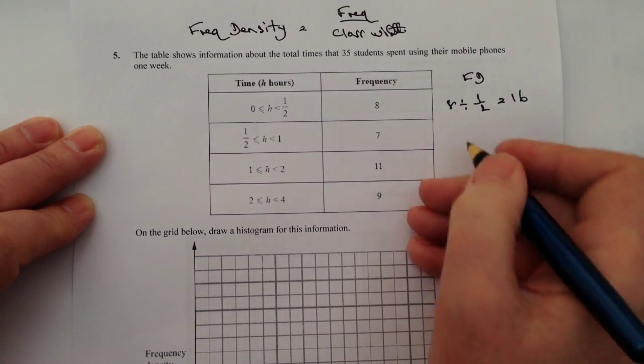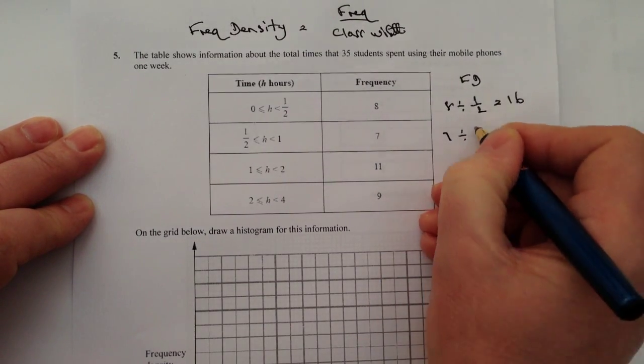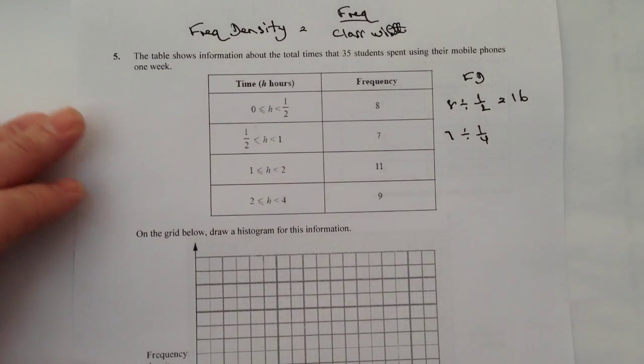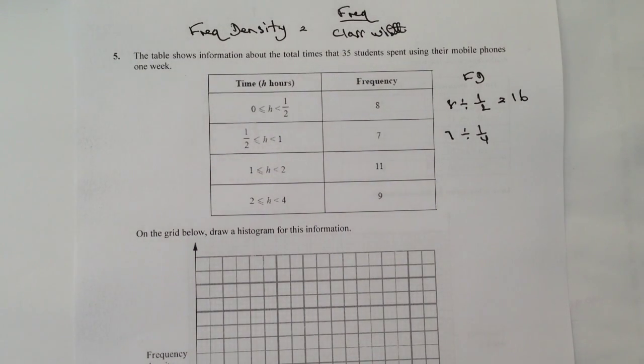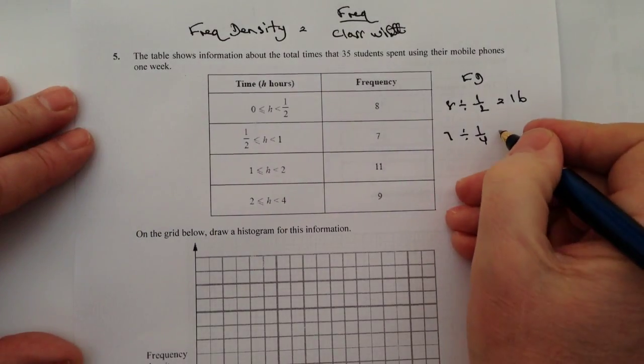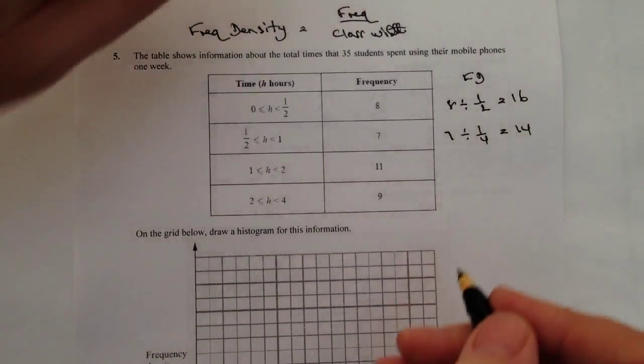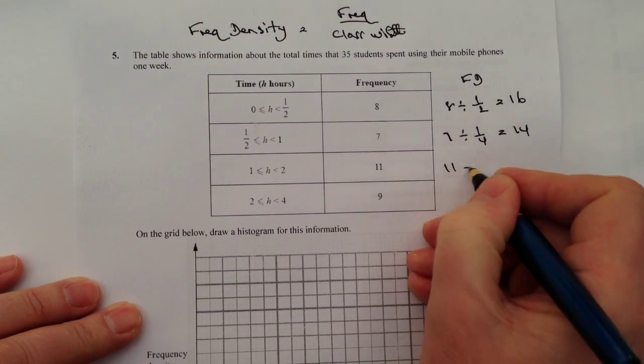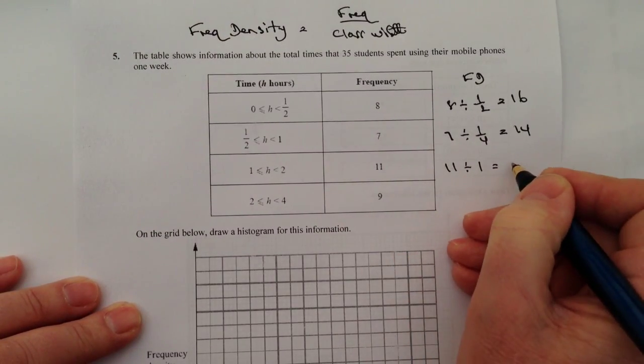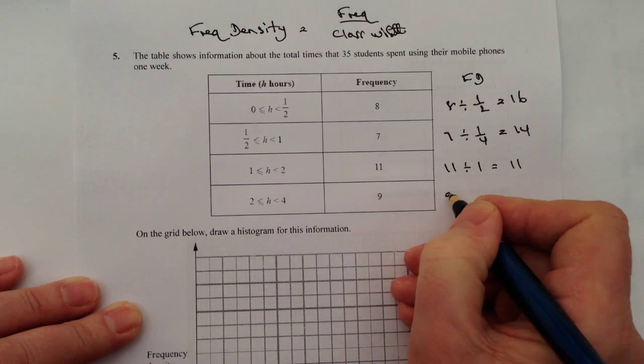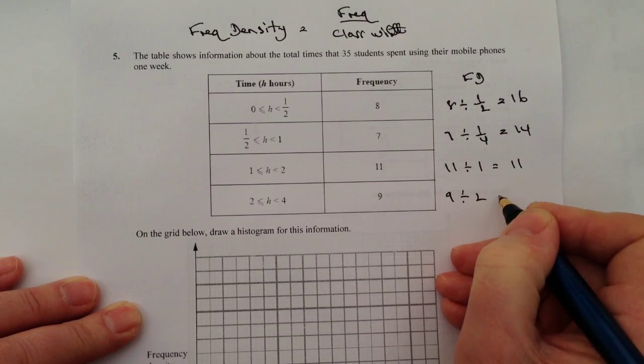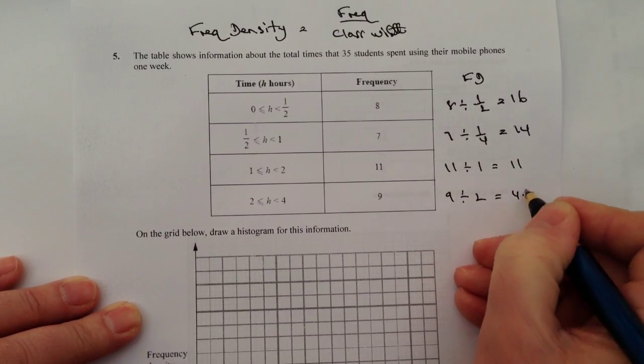The next one is going to be seven divided by a quarter. And I wouldn't get so concerned that you've got fractions to deal with. It's perfectly legitimate to have fractions as part of a class width. So you can work with those just as effectively as you can work with whole numbers. And the final one is nine divided by two, which equals 4.5.